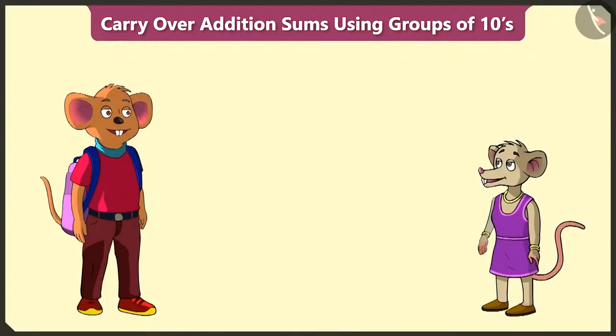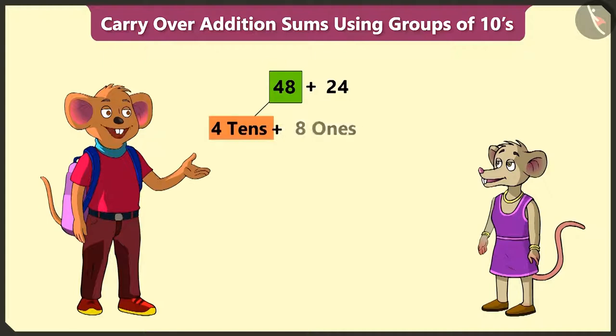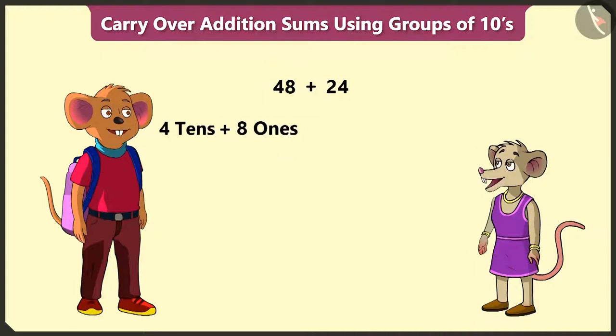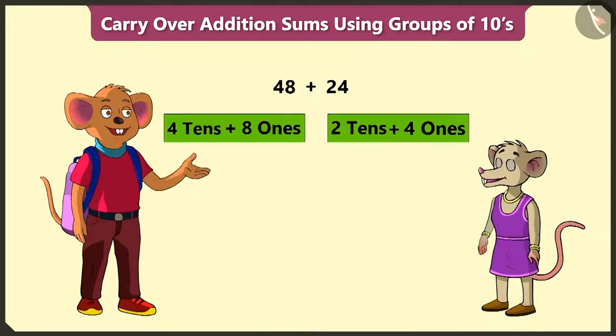For this we have to add 24 to 48. How do we do that? 48, that is 4 tens and 8 ones. Similarly, 24 means 2 tens and 4 ones. Now to add both these numbers, we have to place them in the tens and ones boxes.